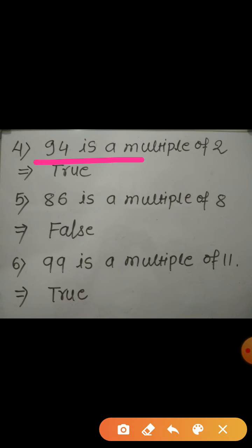Next one, 94 is a multiple of 2. It is also true. See, children, we always say the table of 2 till 20, right? But if we continue the table of 2, we will get the multiple 94. Else, we have an alternative method as well.